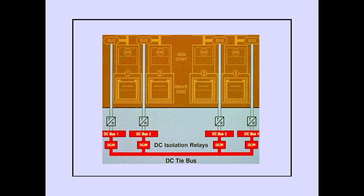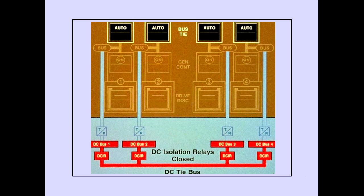Each DC bus is connected to the DC tie bus through a DC isolation relay. With the bus tie switches in auto, the DC isolation relays are closed, connecting the respective DC bus to the DC tie bus.